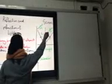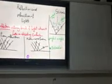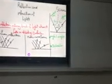When the angle of incidence equals 50 degrees, the angle of reflection also equals 50 degrees, and so on. This is the first law of light reflection.